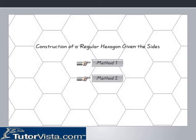Construction of a regular hexagon given the sides. A regular polygon has all its sides and all its angles equal. A regular hexagon can be constructed in two ways. Select a method by clicking on it.